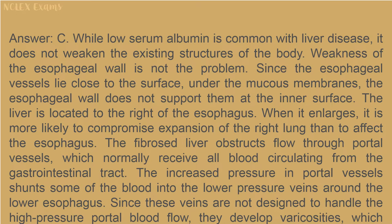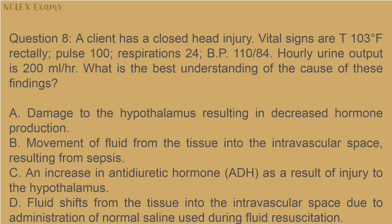Question 8: A client has a closed head injury. Vital signs are: temperature 103°F rectally, pulse 100, respirations 24, BP 110/84. Early urine output is 200 milliliters per hour. What is the best understanding of the cause of these findings? A) Damage to the hypothalamus resulting in decreased hormone production; B) movement of fluid from the tissue into the intravascular space resulting from sepsis; C) an increase in anti-diuretic hormone (ADH) as a result of injury to the hypothalamus; D) fluid shifts from the tissue into the intravascular space due to administration of normal saline used during fluid resuscitation.